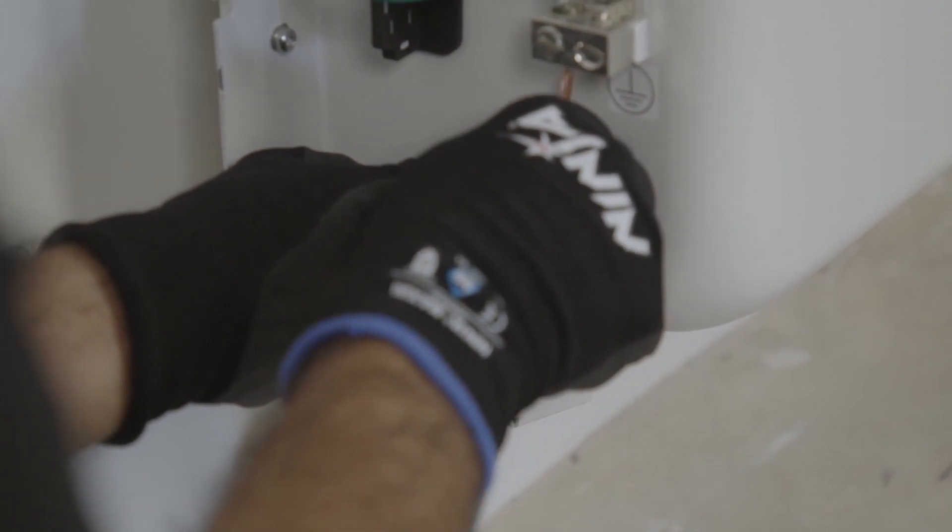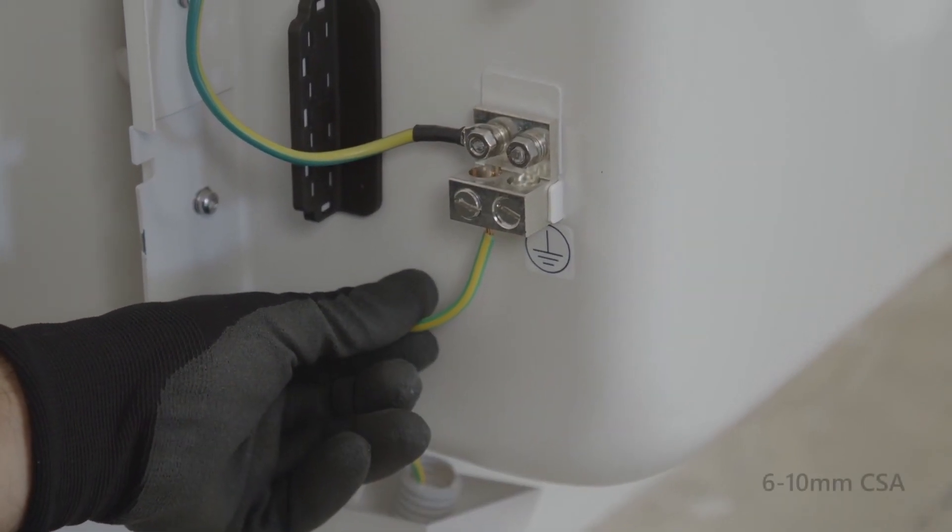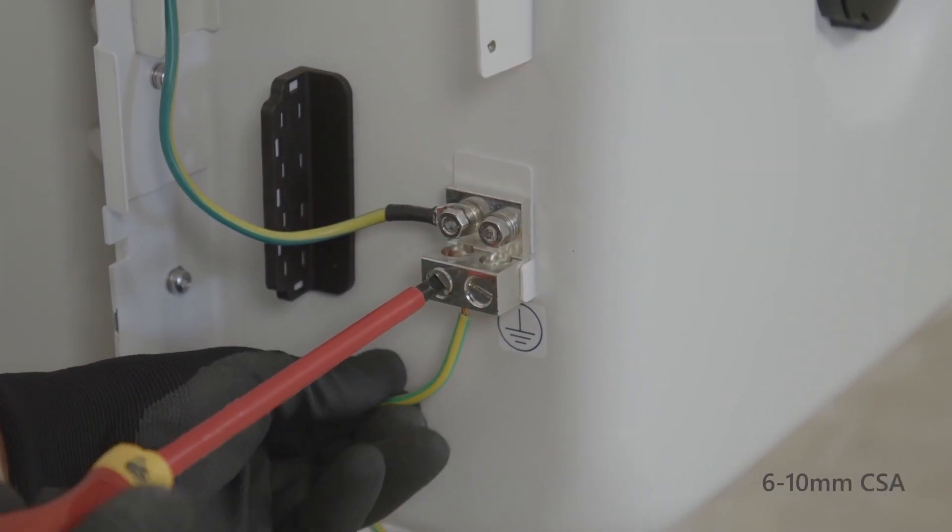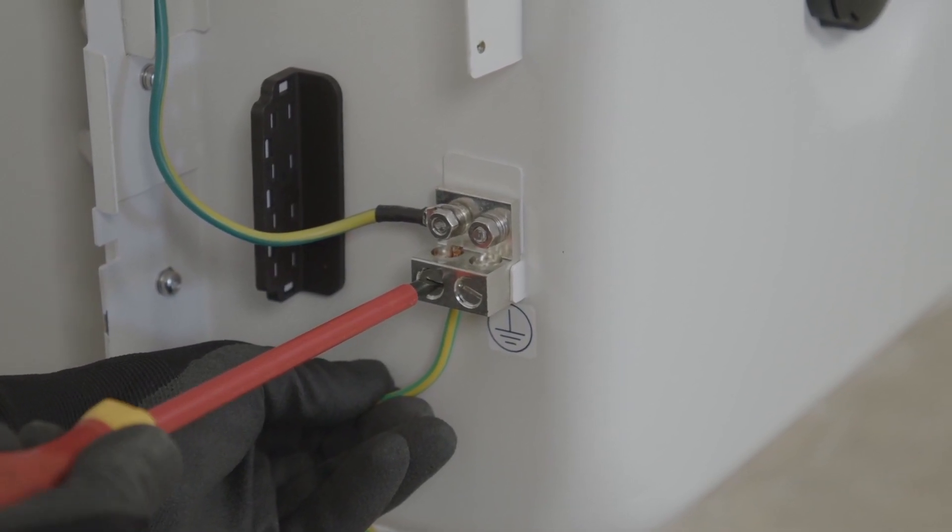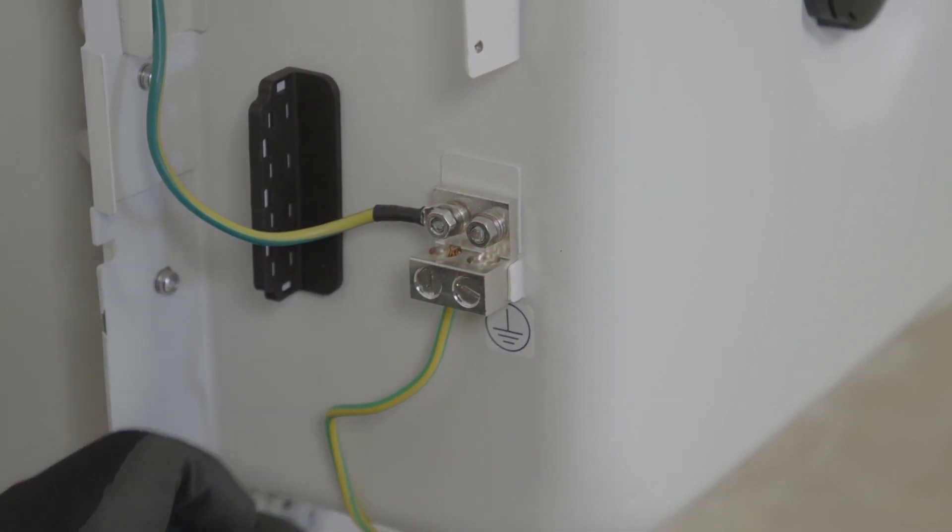Simply wire the earth to the earth terminal bar using either 6 to 10 mm CSA cable. You'll notice that the earth terminal has two fixings, that's for if two batteries are being paralleled together.